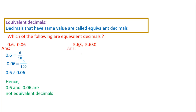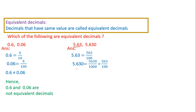Let's take one more problem: 5.63 and 5.630. I will take the first decimal and convert it into a fraction. 5.63 converted into a fraction gives 563 by 100. Similarly, converting the second decimal 5.630 into a fraction, after canceling 10 from the numerator and 10 from the denominator, we will get 563 by 100.